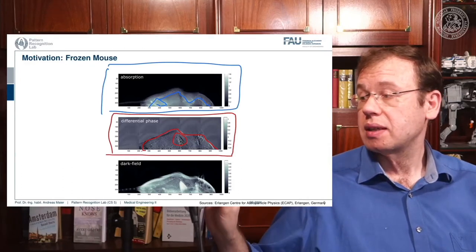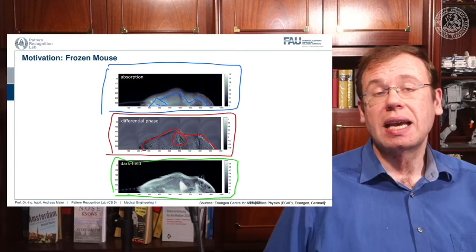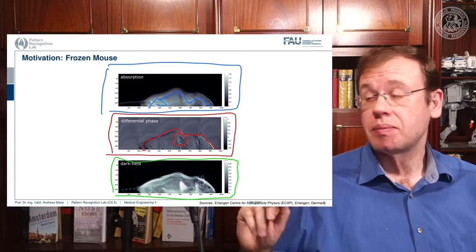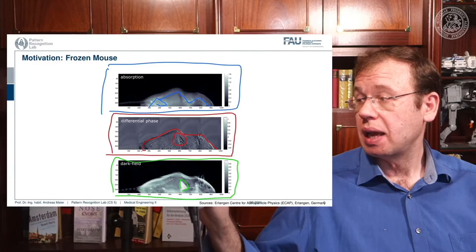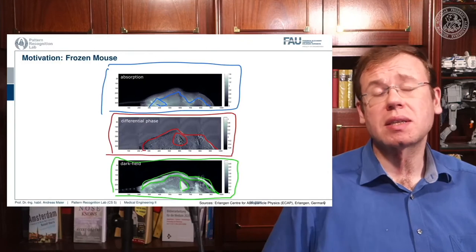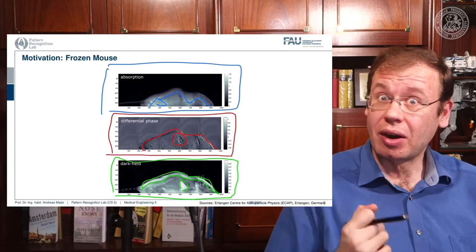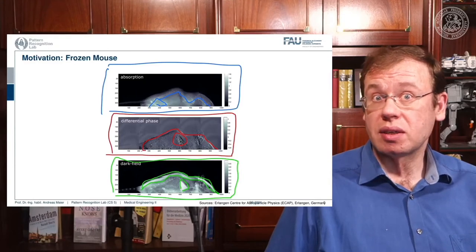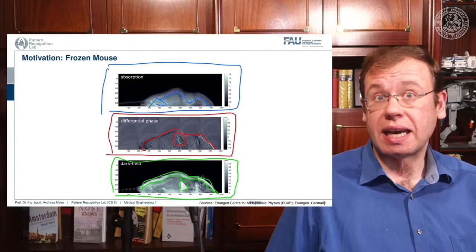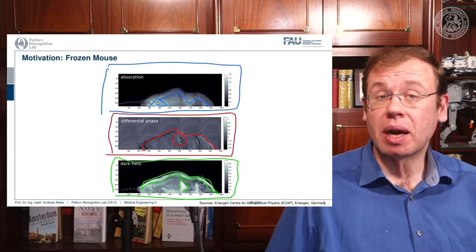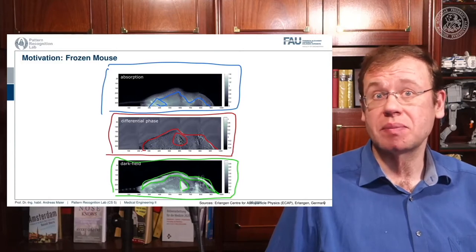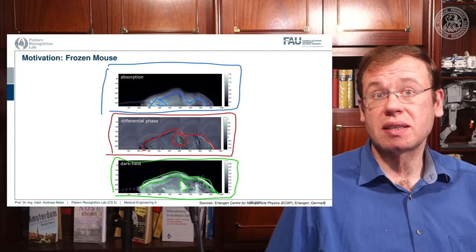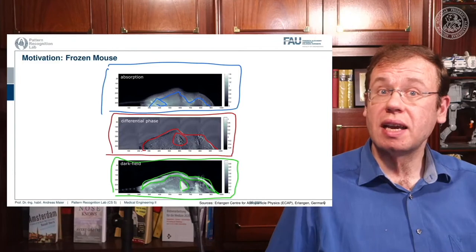We have a third modality: the so-called dark field image. This is a very different contrast because it reacts to structures. You can see it reacts to the lung and also to the fur of the mouse — the tiny hairs growing on it — which causes a large signal in this image. The dark field image is measuring micro-angle scatter. We can see scatter caused by microstructures in the range of micrometers, including the hairs and the small bubbles in the lung that cause this high contrast.